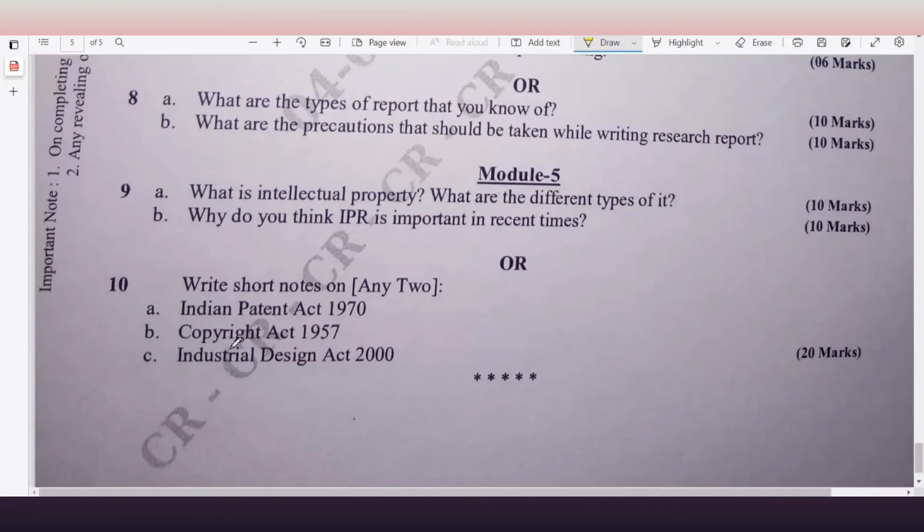Then 10th question is write short notes on any two. Whichever you know, any two you can choose. They are giving a, b, c in 10th question. If you know a and b you can write, or if you know a, c you can write, or b, c, whichever you know you can write it, guys. And in that, 10a: Indian Patent Act 1970. 10b: Copyright Act 1957. 10c: Industrial Design Act 2000.